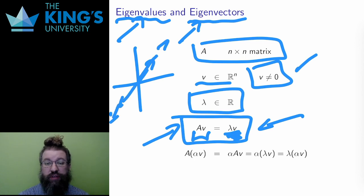If lambda is a positive number larger than 1, then A stretches V to a longer vector. Lambda is the factor of the stretch.